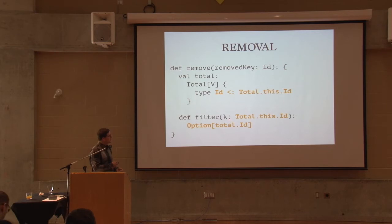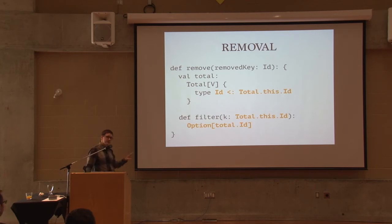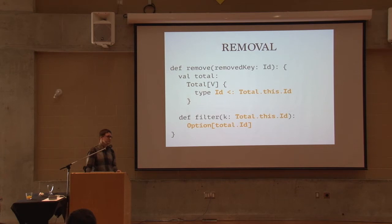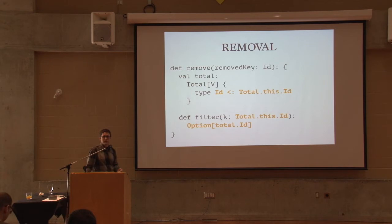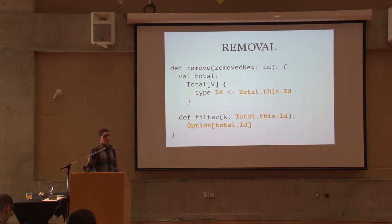The filter function takes an identifier of the old total map and gives you an Option of an identifier of the new total map. This is the cumbersome part of the whole thing — we want guarantees, so we have to prove that we are never storing invalid references. With removal comes a cost: we have to go through all references we had and make sure they're still valid. If they're not, we'll get None and need to handle that — possibly removing the reference or moving it somewhere else.